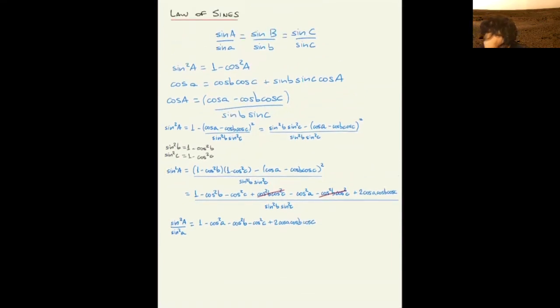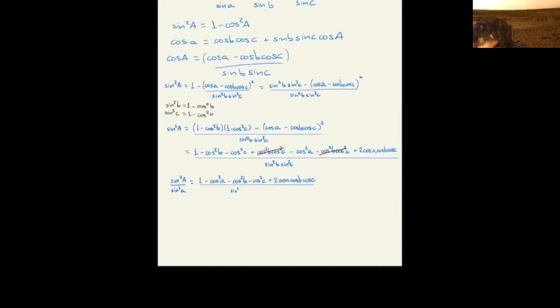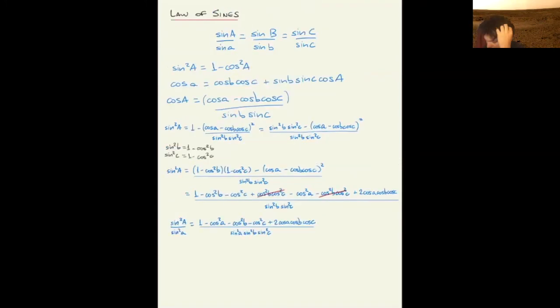And all of that under sine squared of a, sine squared b, and sine squared c. Now the right hand side is invariant under cyclic permutation of a, b, and c.